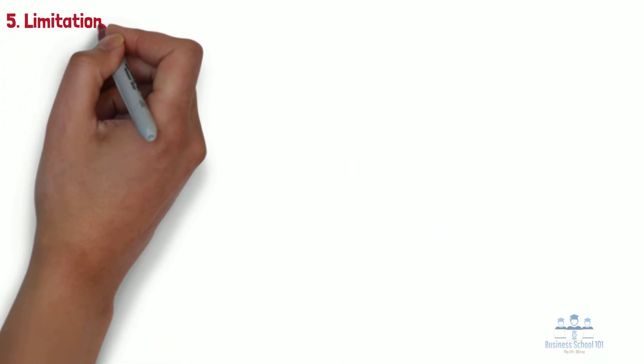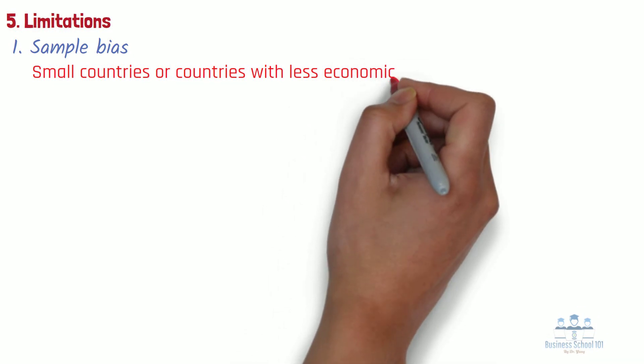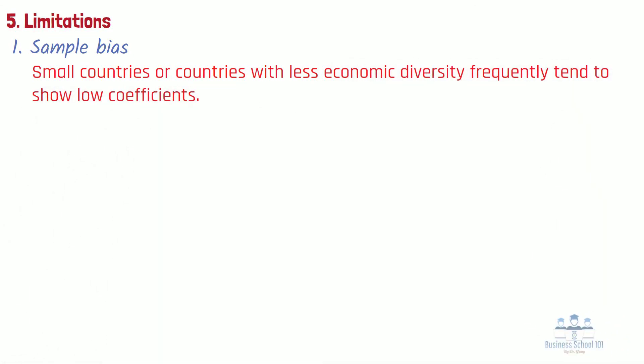Section 5: Limitations. Despite its numerous advantages, there are still some limitations to the Gini coefficient. First, sample bias: the validity of Gini coefficient calculations can be dependent on the size of a sample. For example, small countries or countries with less economic diversity frequently tend to show low coefficients, while large economically diverse countries usually demonstrate high coefficients.